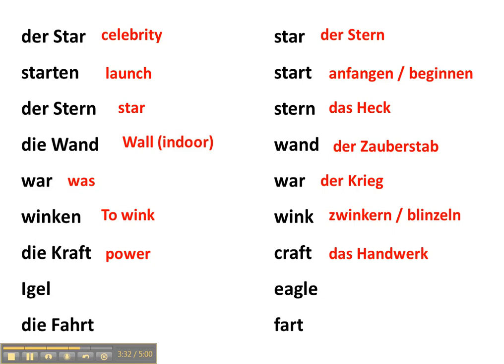Igel, which in German is the German word for hedgehog. And we have the word eagle, which sounds somewhat similar, but means ein Adler in German, which is the word for the eagle.